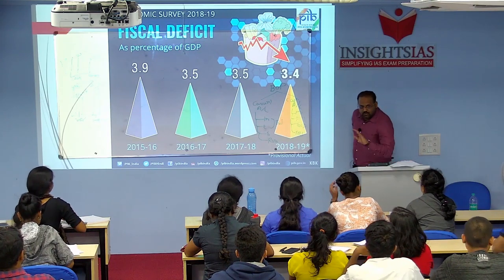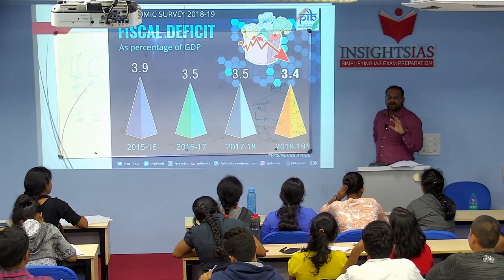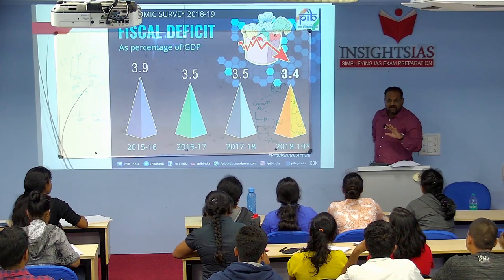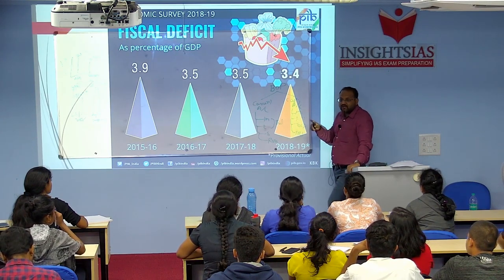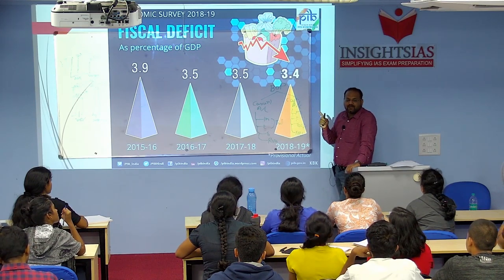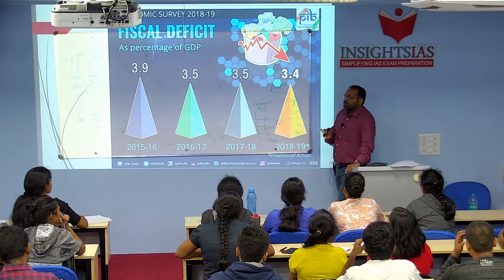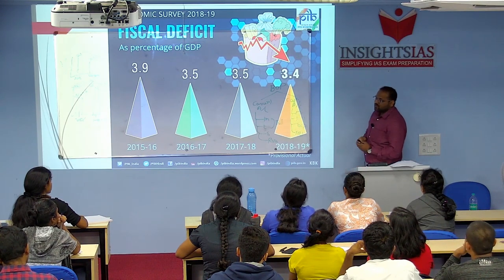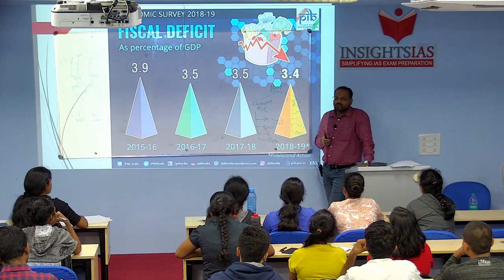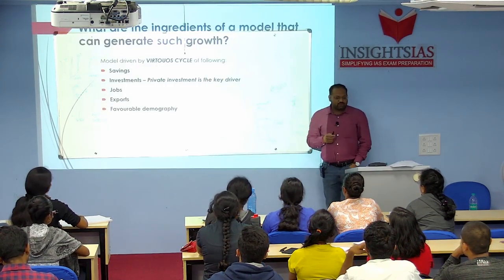So overall, the macroeconomic variables — growth rate, inflation, CAD, forex, fiscal deficit — have been within manageable limits and are stable. Due to this stability, we are now aspiring to become a USD 5 trillion economy. Now, what should be the model of economic growth to achieve USD 5 trillion? What are the ingredients of that model?